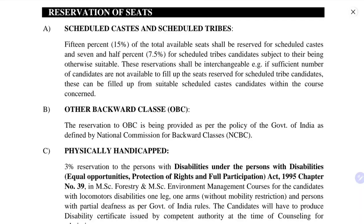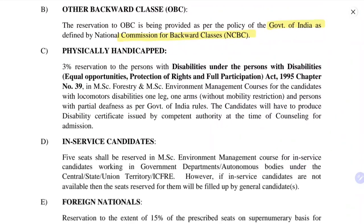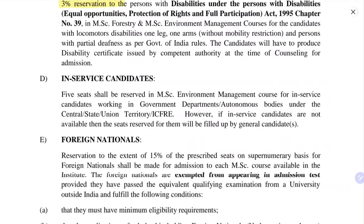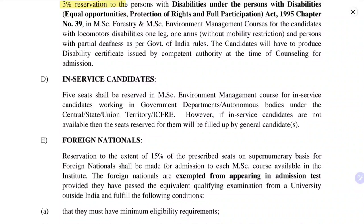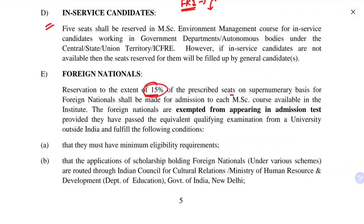Reservation is as per the Government of India: 15% of total available seats are reserved for Scheduled Castes and 7.5% for Scheduled Tribe candidates, subject to their being otherwise suitable. OBC reservations follow the Government of India policy as given by the National Commission for Backward Classes (NCBC). There is 3% reservation for physically handicapped candidates. In-service candidates — those actually working at the FRI campus — can also apply for the MSc course. Foreign nationals have reservation up to 15% of the prescribed seats.